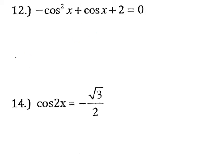For number 12, we must factor to solve the equation since we have cosine squared x plus cosine x. However, there's a negative in front of the cosine squared x, so we want to first multiply everybody by a negative so our first term is positive. Now we're ready to factor.